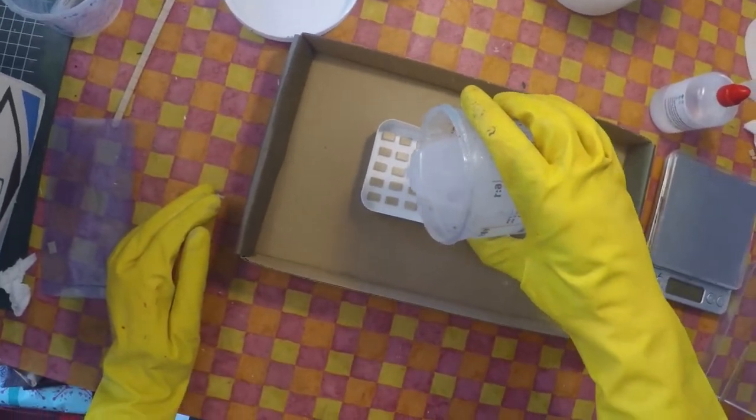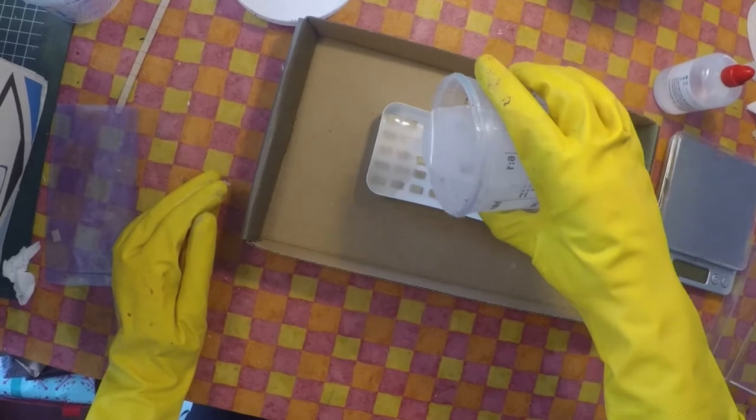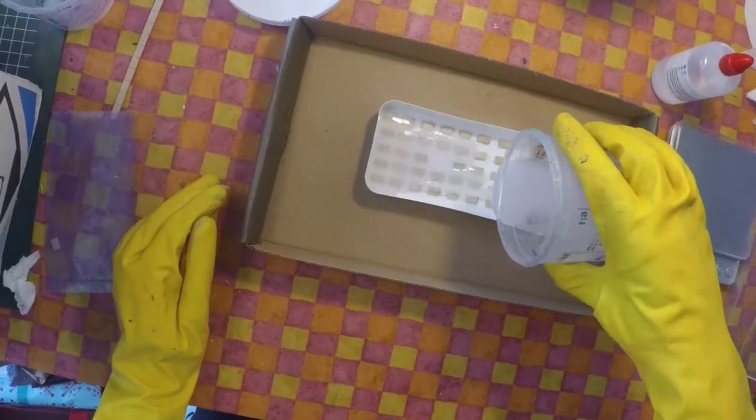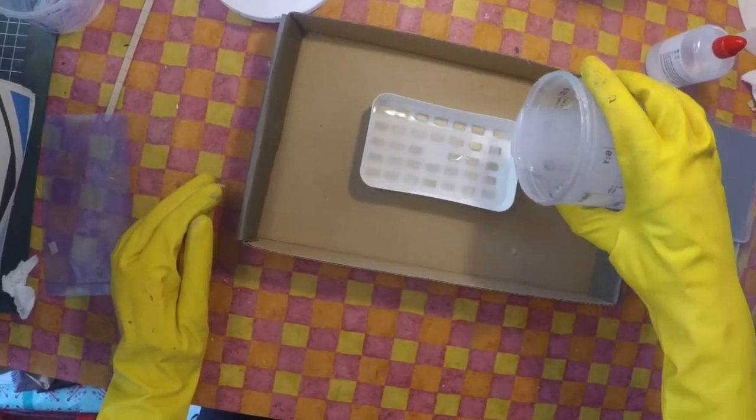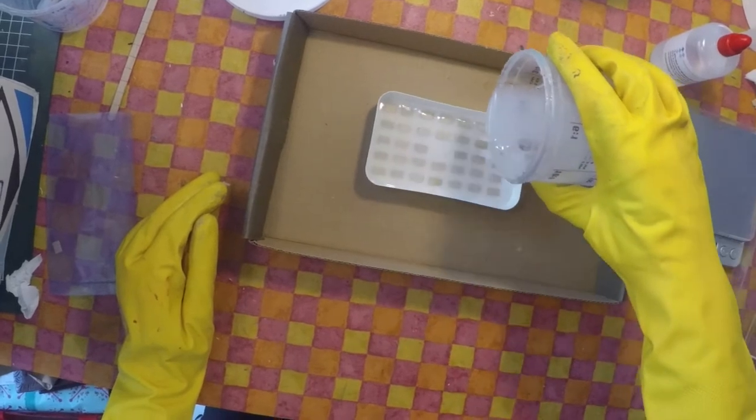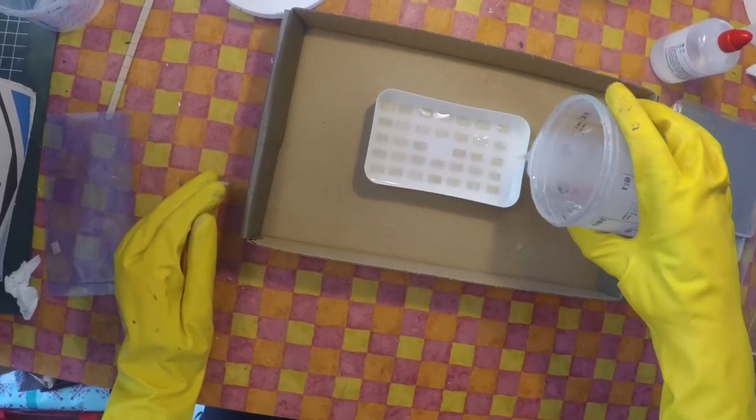Pour enough silicone in to cover all of the bricks. It doesn't need to be a lot though. If you have leftover silicone, you can use it to make molds of random objects, like teeth or toenails or something nice.